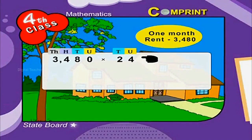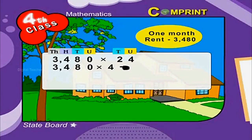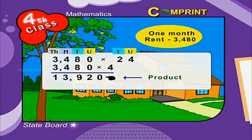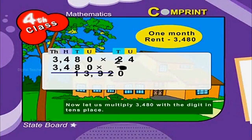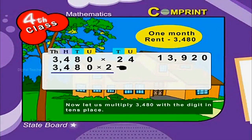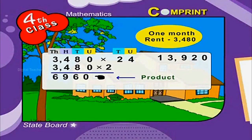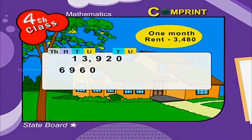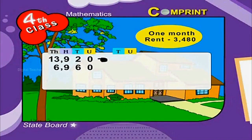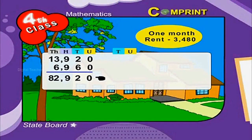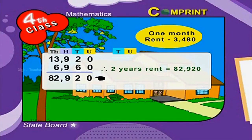First, let us multiply 3480 with the digit in the units place, that is 4. We get the product 13920. Now let us multiply 3480 with the digit in the tens place, that is 2. We get the product 6960. Now let us add both the numbers: 13920 plus 6960. We get the sum as 82920. Therefore, this is the rent of the house for 24 months, that is for 2 years.